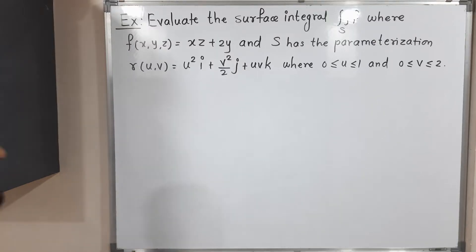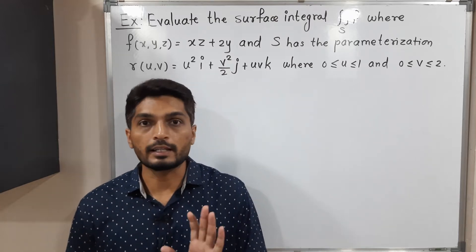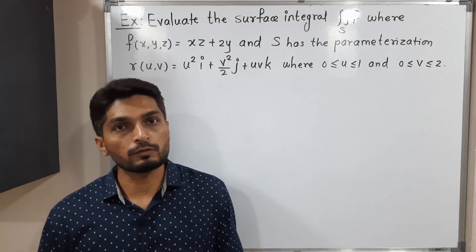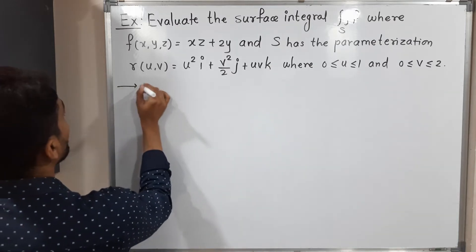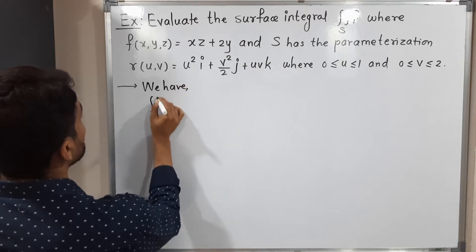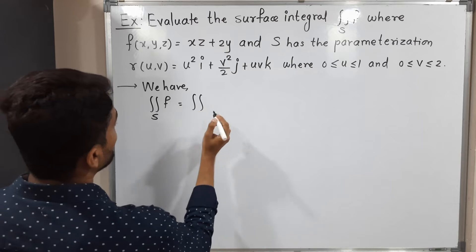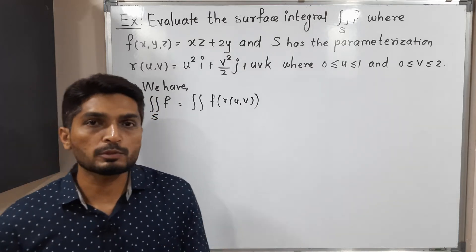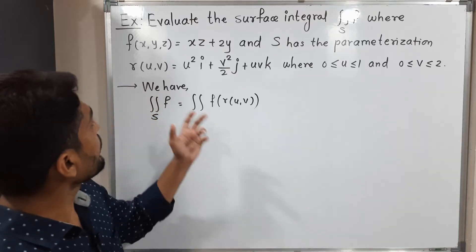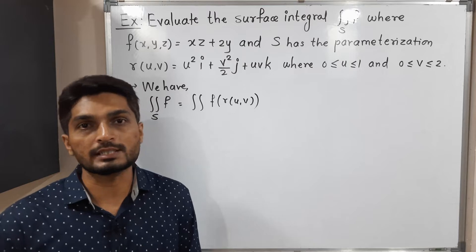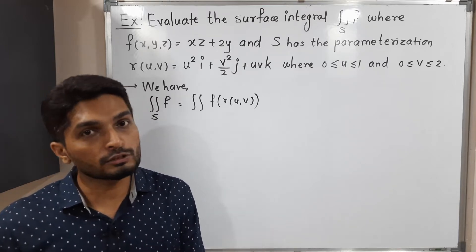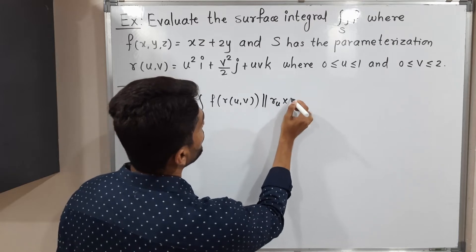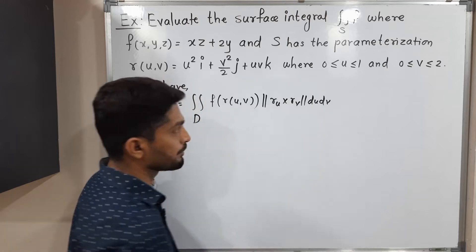Let us discuss this example where we have to find the value of a surface integral of a scalar field. The definition of the surface integral of scalar field f over surface s is: double integration of f(r(u,v)) over domain D, times the norm of r_u cross r_v, du dv, where r is a parameterization of surface s defined on domain D.